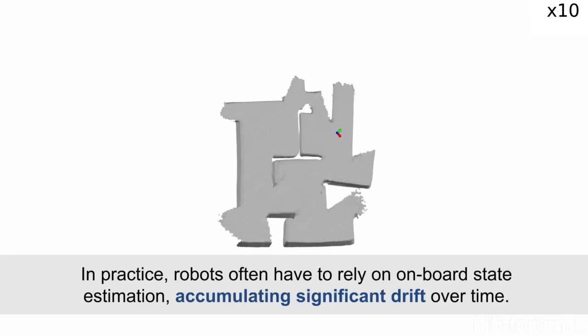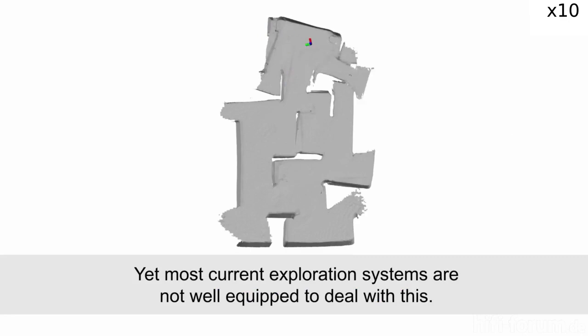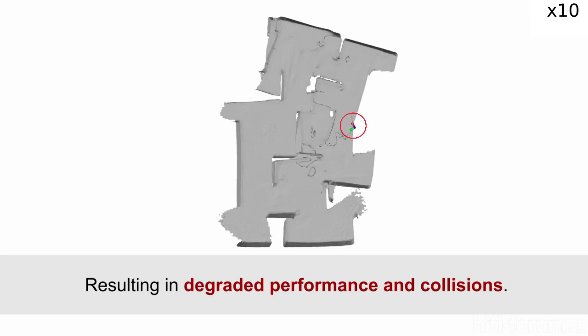In practice, robots often have to rely on onboard state estimation, accumulating significant drift over time. Yet most current exploration systems are not well equipped to deal with this, resulting in degraded performance and collisions.